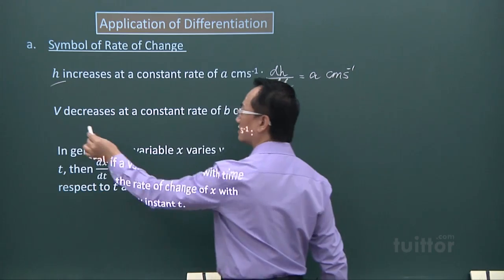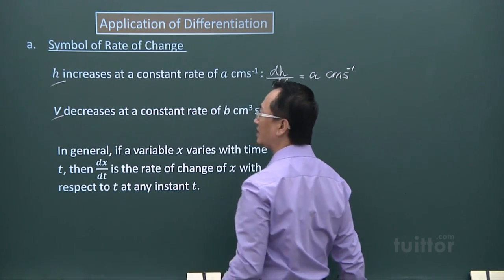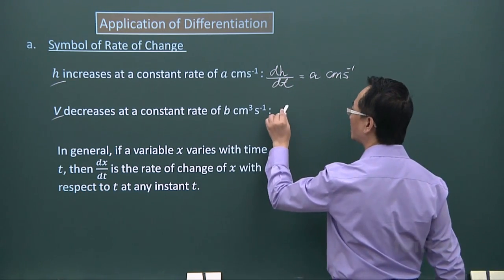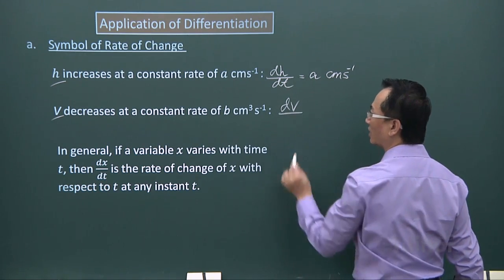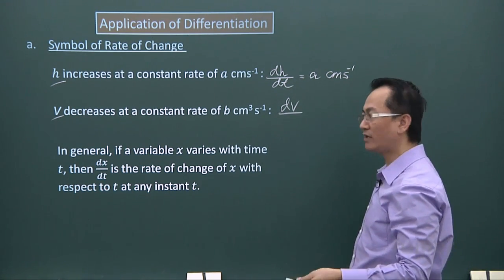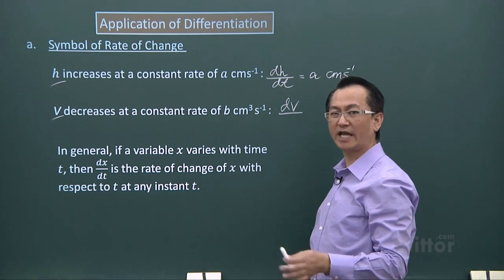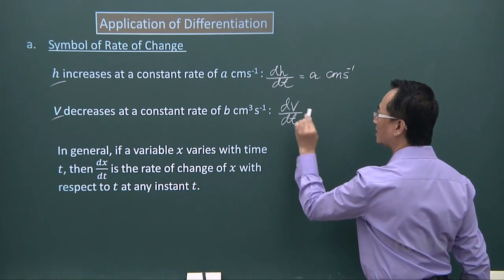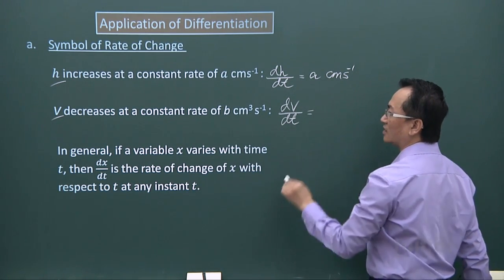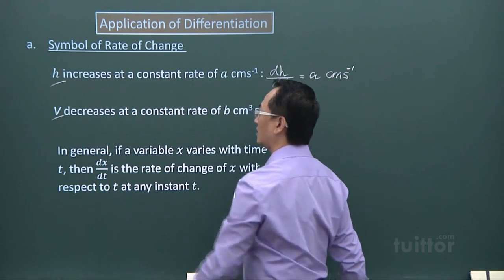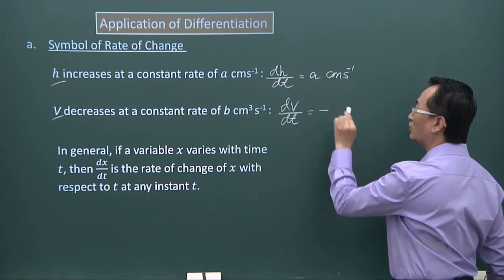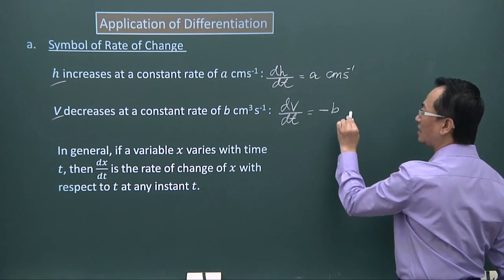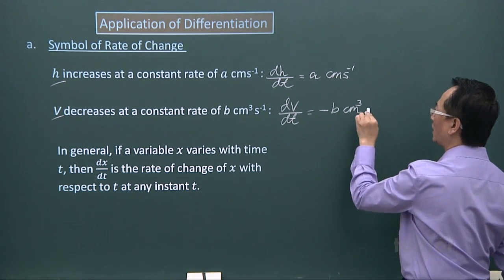In this case where you have v decreases at a constant rate, the subject is v, so dv over dt. Rate of change refers to changes as time changes. Since it decreases, we will have to indicate by having a negative there: negative b cm cubed per second.